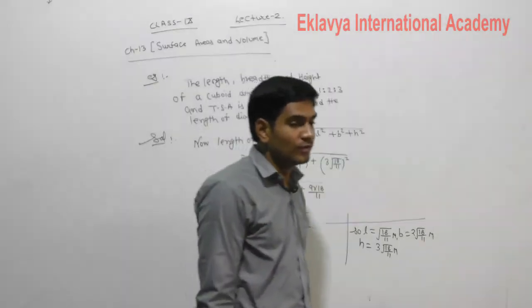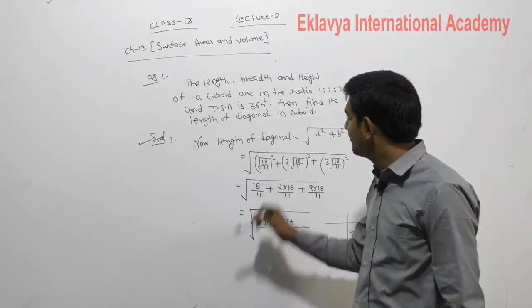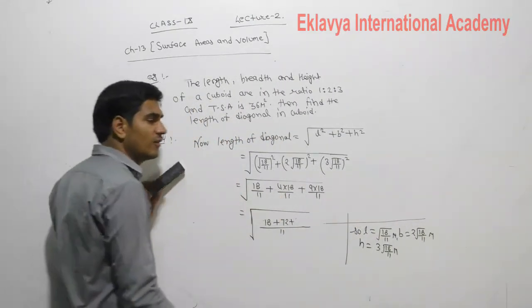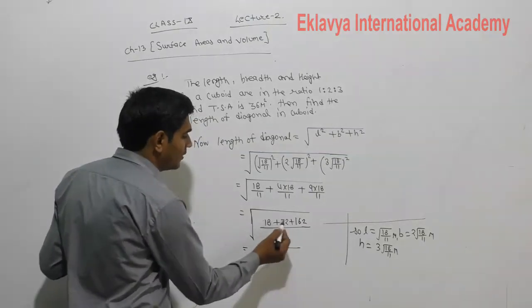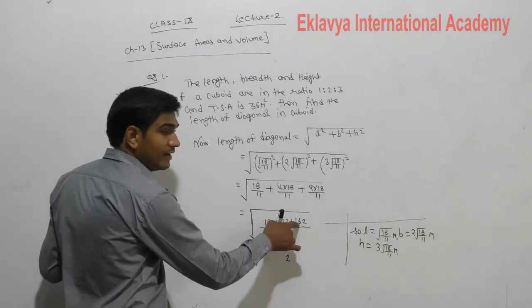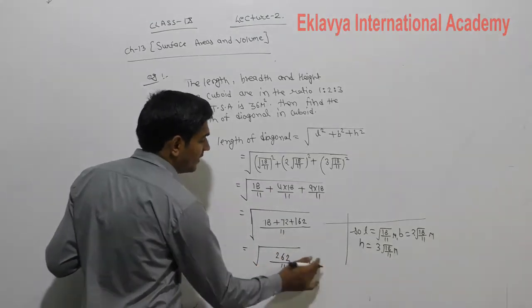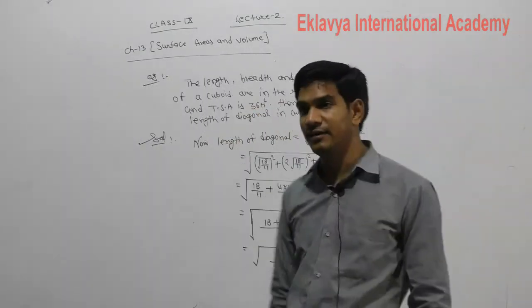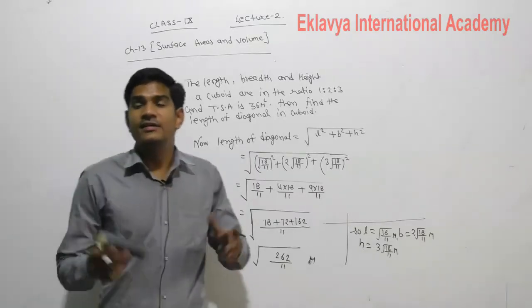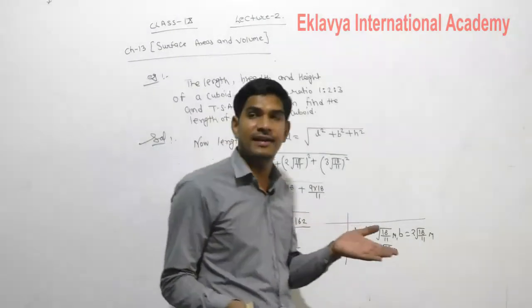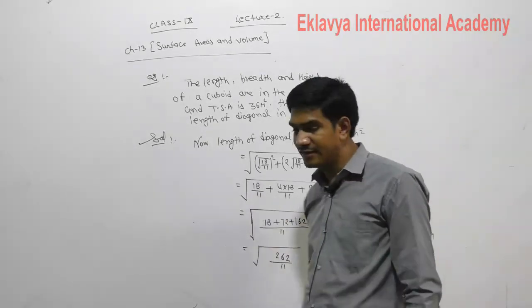So the question is quite easy. The sides are given in ratio, so length, breadth, and height ratio is given. With the help of TSA we calculate the values of L, B, and H. Then we calculate the length of the diagonal. First use TSA to find LBH, and then use those values to find the length of the diagonal.